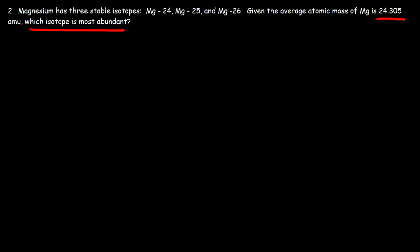Would it be Mg-24, Mg-25, or Mg-26? Now keep in mind this number is an average—it's the average atomic mass of the masses of these elements. So which number is closest to 24.305? The answer is 24. So because this particular isotope is closest to the average atomic mass, this one is most likely to be the most abundant isotope of magnesium.